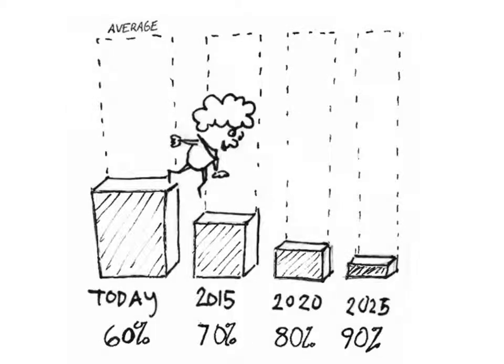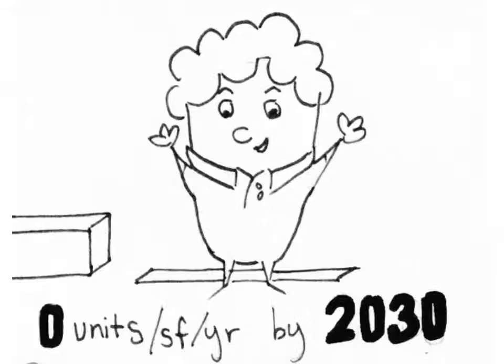We can make a plan to reduce EUI. Today we can aim to design 60% better than average, 70% better by 2015 and 90% better by 2025. And if we keep at it, we can reduce building emissions to zero by 2030.